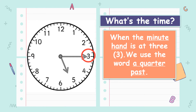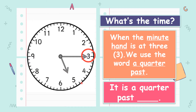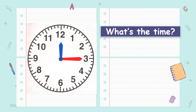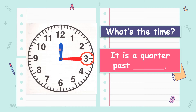So in this example, where is the hour hand? The hour hand shows 5, so we would say it is a quarter past 5. Let's try another example. What's the time? If we look at the minute hand, the long needle, it is at 3. And what about the hour hand? It is at 12. So the answer would be: it is a quarter past 12.